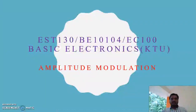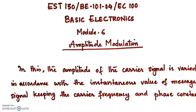Hi all, in this video lecture, we will be discussing about the basics of amplitude modulation and we will derive an expression for AM modulated waveform. In amplitude modulation, the amplitude of the carrier signal is varied in accordance with the instantaneous value of the message signal, keeping the carrier frequency and phase constant.